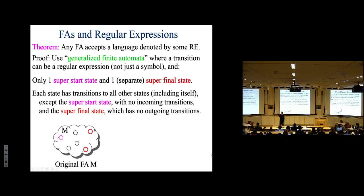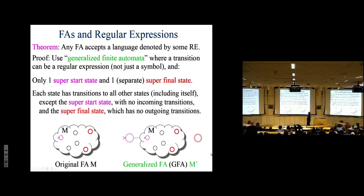The first half of the proof — converting a regular expression to a finite automaton that accepts the same language — was described last time. The converse is also true: if you have a finite automaton, you can always come up with a regular expression that denotes the language it accepts. That direction is a bit of a trick, and we went through the proof quickly last time.